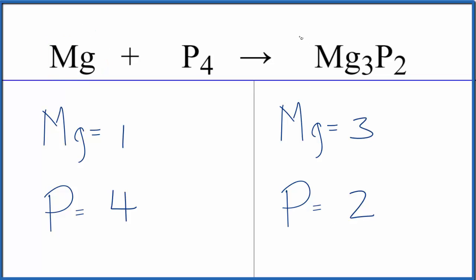For phosphorus, we could put a two in front of the Mg3P2. Two times two, that'll give us four. So we've balanced the phosphorus atoms.